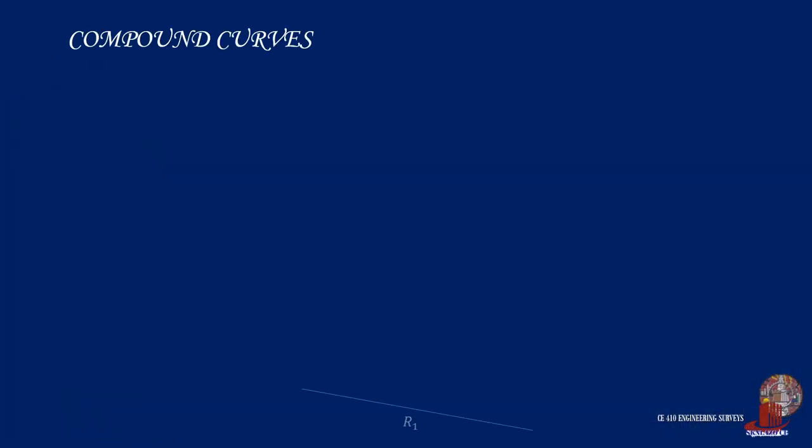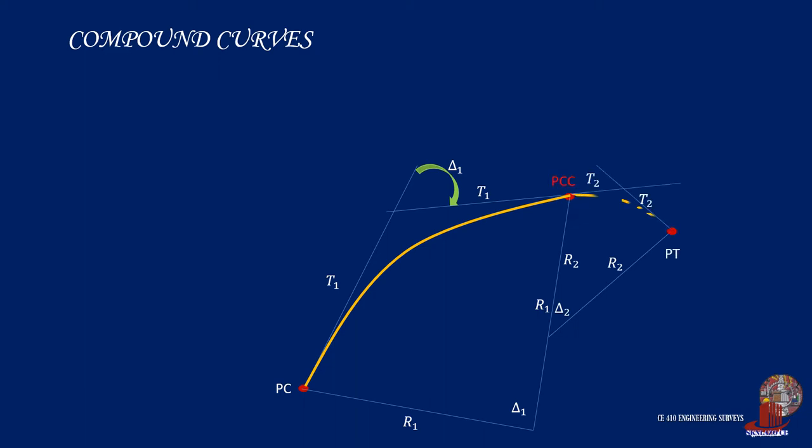A compound curve is created by two simple curves. If a simple curve with radius R1 and central angle delta 1 is connected with another simple curve with radius R2 and central angle delta 2, a compound curve is formed. A compound curve has the centers of the curves in one direction, as the image shown. Both centers are below the curves. We denote the elements of the first curve with 1 and the second curve's elements with 2.